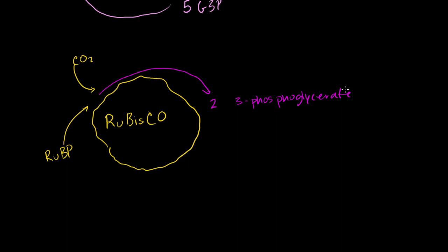In the last video, I started with three of these and three of these, so I ended up with six of these. For every one ribulose biphosphate, you end up with two 3-phosphoglycerates. This is the proper Calvin cycle. And then these turn into your phosphoglyceraldehydes — two phosphoglyceraldehydes, or PGALs.